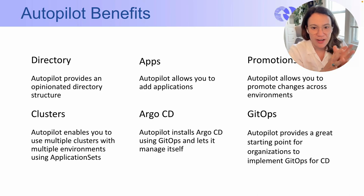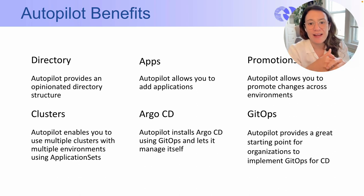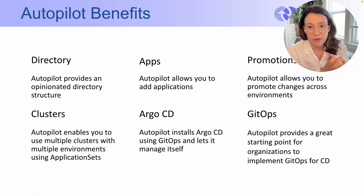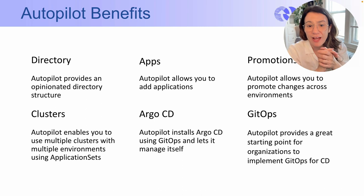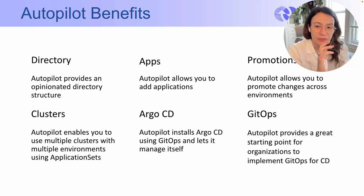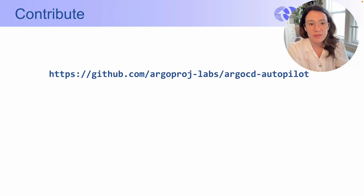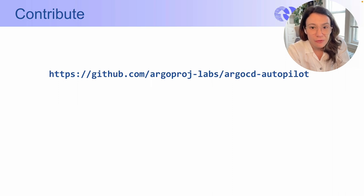Now that you've had your crash course of Argo CD Autopilot and seen a demonstration of how it works, let's review some of the benefits. Autopilot provides an opinionated way to build multi-project, multi-application systems using GitOps principles. It creates a new GitOps repository, or you can use an existing one. It supports creating the entire directory structure under any path you require. When adding applications from a public repository, it allows committing as either a customization referencing the public repo or as a flat manifest file. And you can use a different cluster from the one Argo CD is running on as a default or target cluster. Argo CD Autopilot is still under active development — you can find it under the Argo project, Argo Labs.